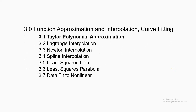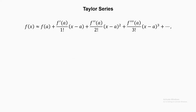Engineering is loaded with numerous complicated relations and equations that are too difficult to translate for practical application. In that sense, most of the advanced and sophisticated analysis in engineering works with the aid of Taylor series. Taylor series is a representation or translation of a function as an infinite sum of terms that are calculated from the values of the function's derivatives at a single point. This means the function can be approximated using a finite number of terms of its Taylor series, and as the number of terms increases, so does the accuracy of the approximation.